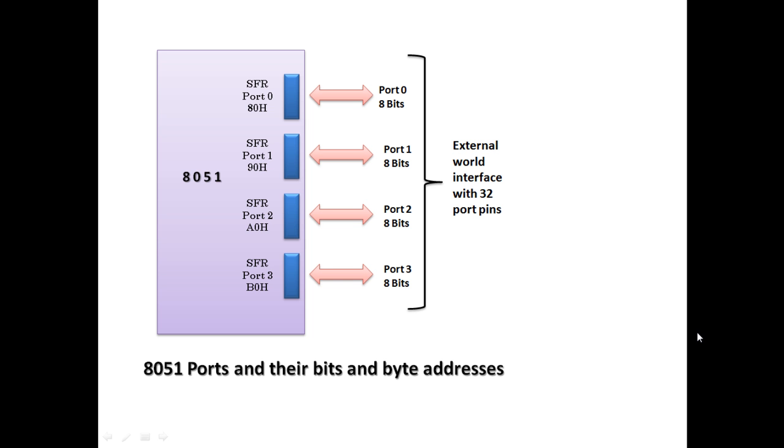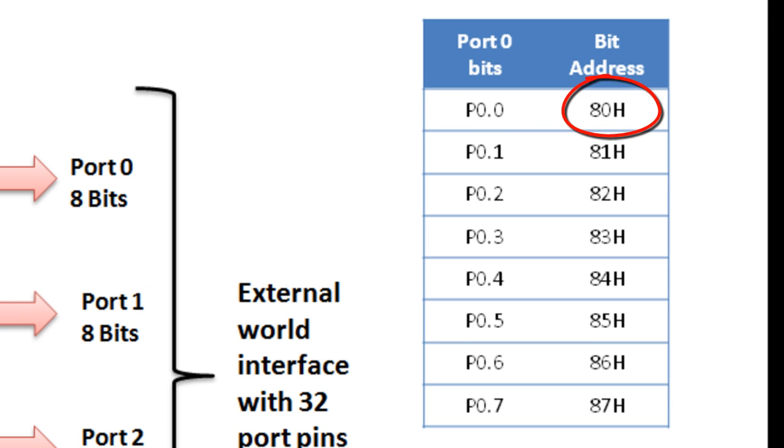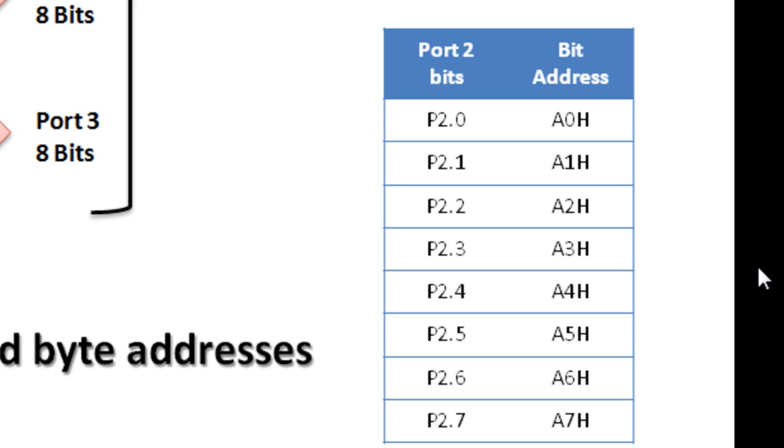The bit addresses of these ports are shown here. Port 0 bit address P0.0 is 80H, P0.1 is 81H and so on, P0.7 is 87H. Port 1 P1.0 is 90H, P1.1 is 91H and so on, P1.7 is 97H. Similarly, we have port 2 from A0 to A7H and port 3 from B0 to B7H.